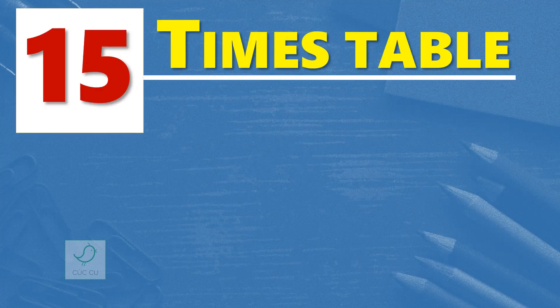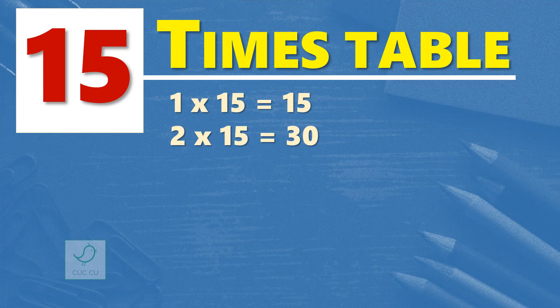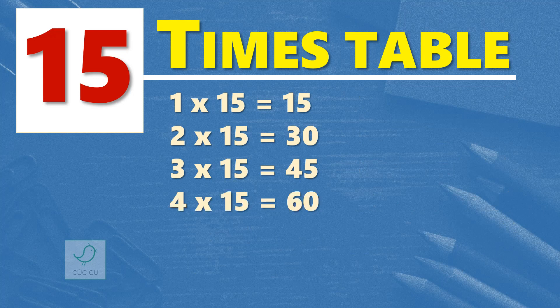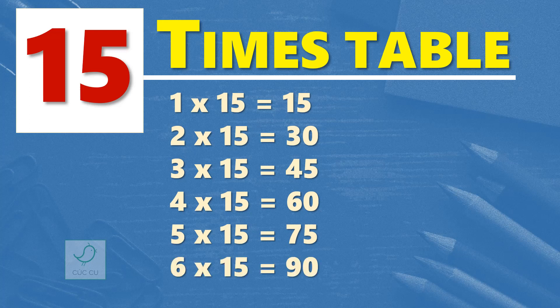One times 15 is 15. Two times 15 are 30. Three times 15 are 45. Four times 15 are 60. Five times 15 are 75. Six times 15 are 90.